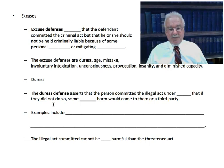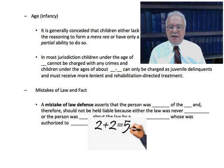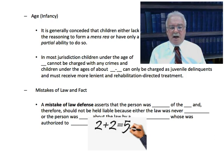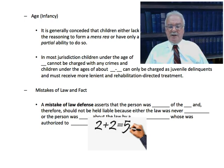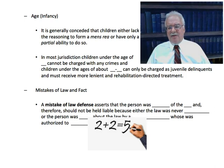Let's look at the age defense. It is generally conceded that children either lack the reasoning to form a mens rea — the guilty mind — or have only a partial ability to do so. In most jurisdictions, children under the age of six cannot be charged with any crime no matter what they do. Children between ages six and 18 can only be charged as juvenile delinquents, which isn't technically a criminal conviction, and they generally have sentences that are more reform-minded, with more lenient and rehabilitation-directed treatments.